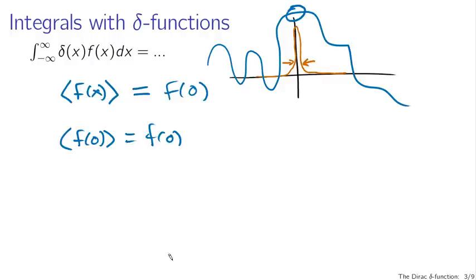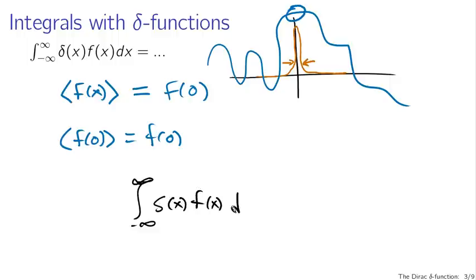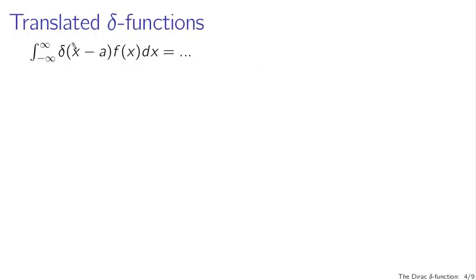So this is our first really useful formula with delta functions. If we integrate delta of x times any function f of x from minus infinity to infinity, we just get f of 0. Delta functions effectively make integrals go away. We can do this not just for delta of x, but for delta functions of x minus anything—for instance, x minus a.